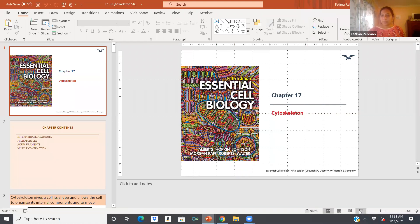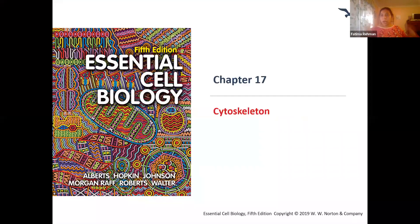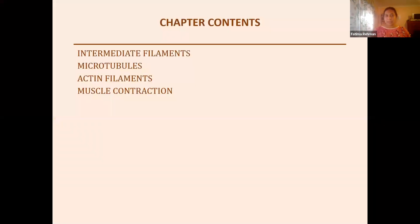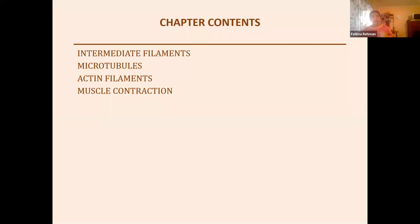We are going to talk about the main parts of the cytoskeleton today, and then we'll talk about why we use them and what functions they perform. Next time when we meet in class, we'll go deeper. This chapter's main focus is the various components of the cytoskeleton structure — we'll talk about intermediate filaments, microtubules, and actin filaments.